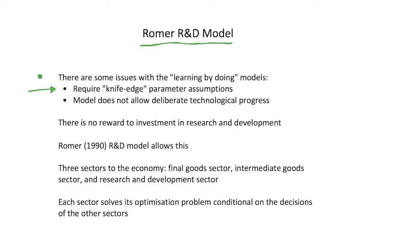We had that alpha plus mu had to equal 1 for us to have a nice balanced growth path in our AK model we looked at.